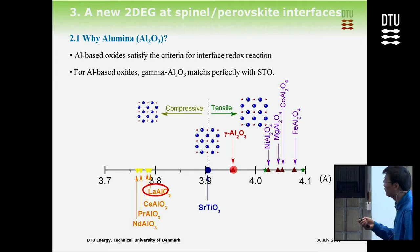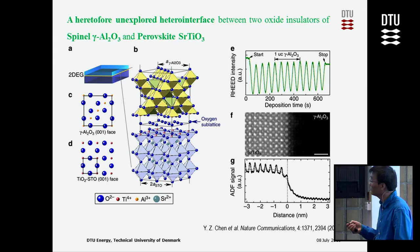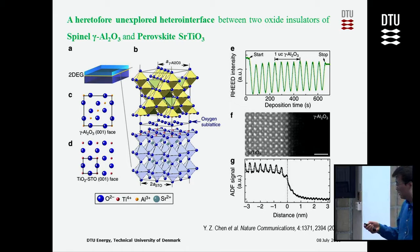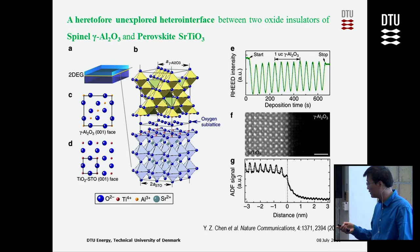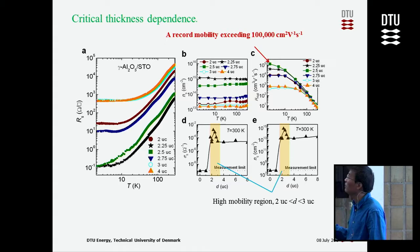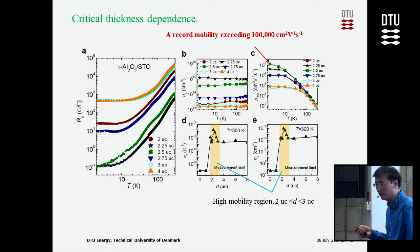So we tried growing gamma-alumina on STO. Gamma-alumina has a spinel structure, but if you carefully look at the structure and the chemistry, you find it can also grow well on STO. We succeeded in growing a very high quality interface, and the interface is conducting with very high mobility — around 100,000 — which so far is the best in the field.